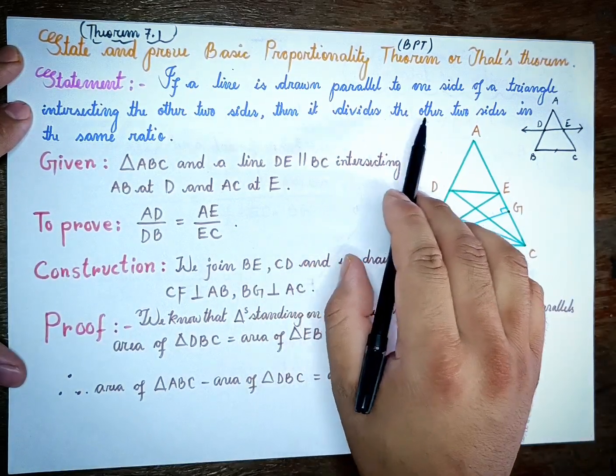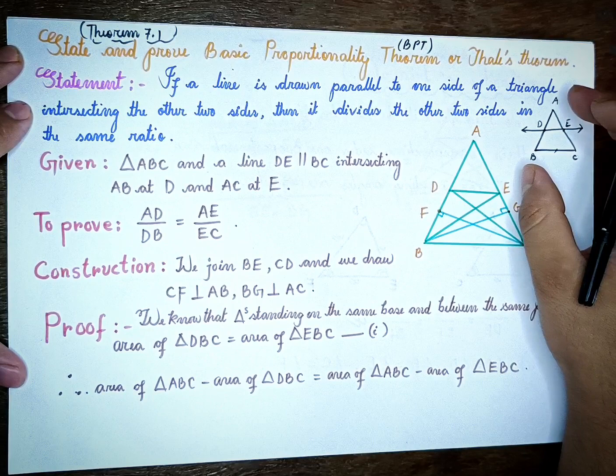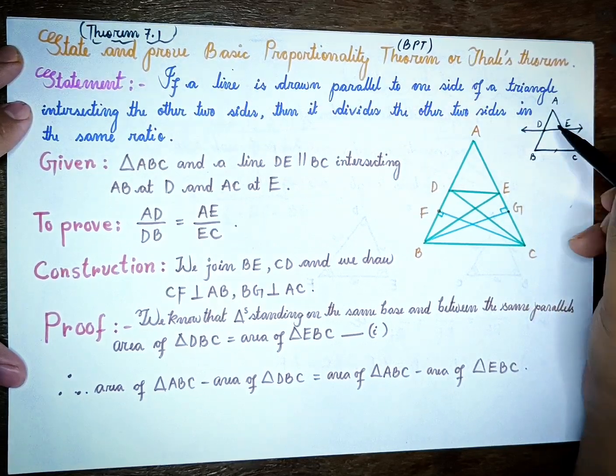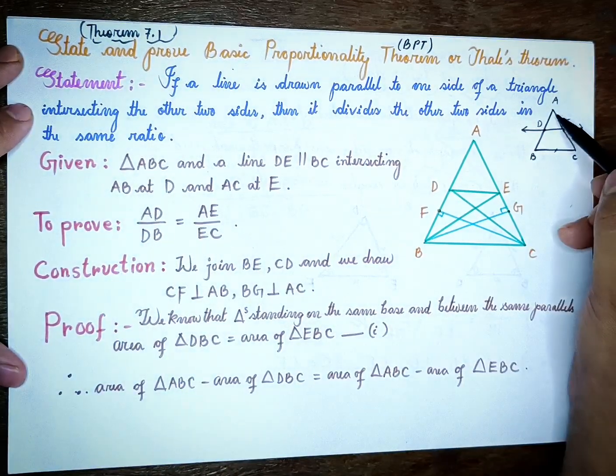Then it divides the other two sides, and the other two sides are in the same ratio.